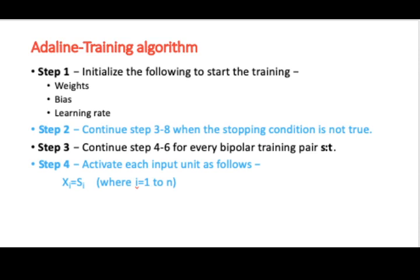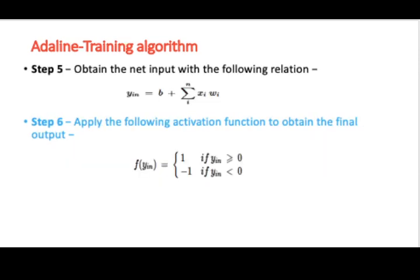Then you run a sequence of steps that runs in an iterative fashion until the stopping condition is not true. You activate each input unit as X_i equals S_i where i ranges from 1 to N. And then you obtain the net input using a relation Y_in equals B plus sigma i=1 to N X_i into W_i. Then you apply an activation function. And when you talk of an activation function, it looks like this: f(Y_in) equals 1 if Y_in is greater than or equal to 0, minus 1 if Y_in is less than 0. This is what is called activation function.